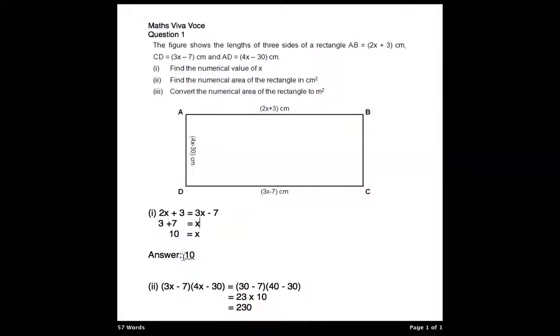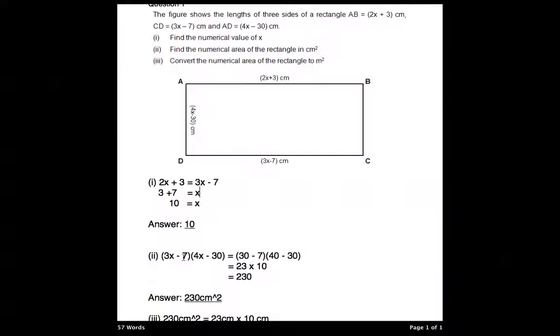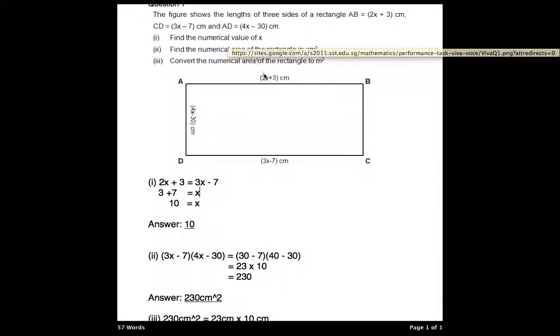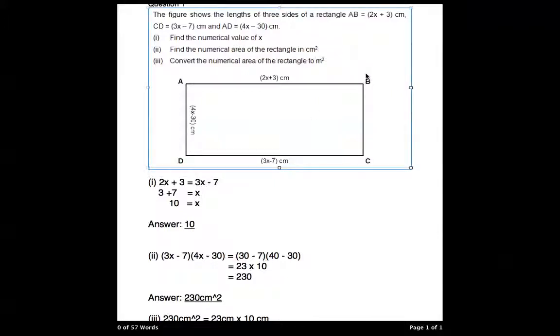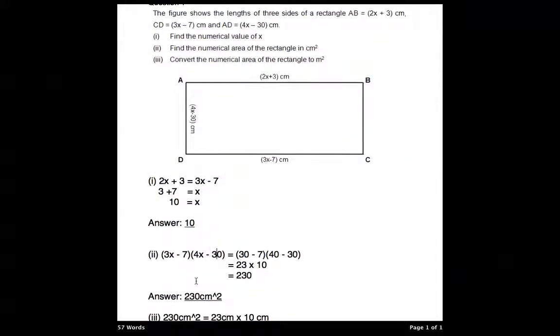Now, we go on to the second part. The second part is part 2. They say find the numerical area of the rectangle in cm squared. So I will take 3x minus 7 and I times it with 4x minus 30.